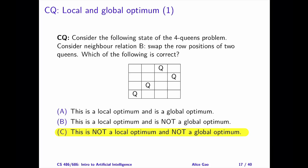Question 1. The neighbor relation says to pick two queens and swap their row positions. The correct answer is C. This state is not a local optimum and not a global optimum.